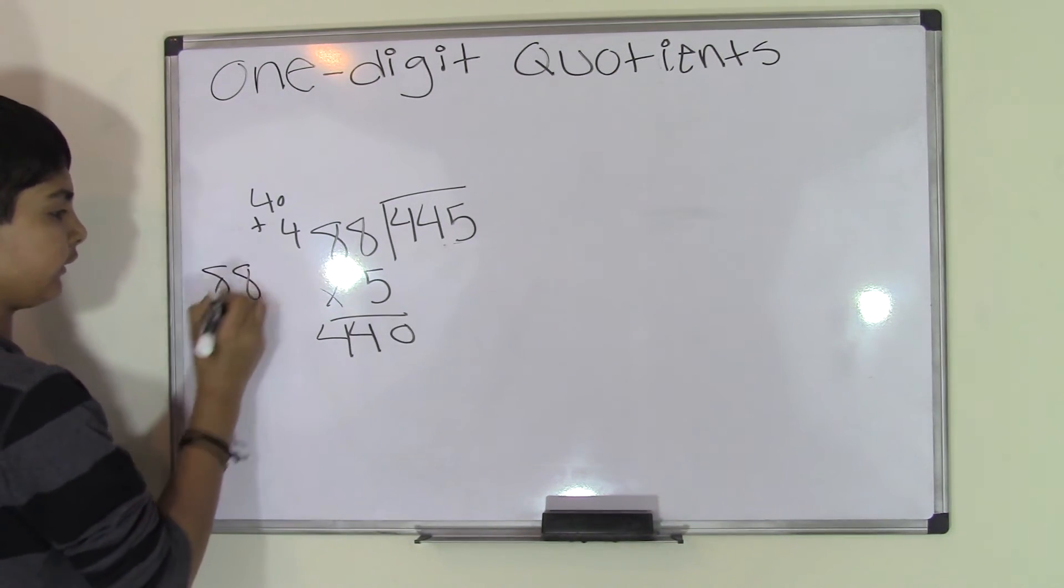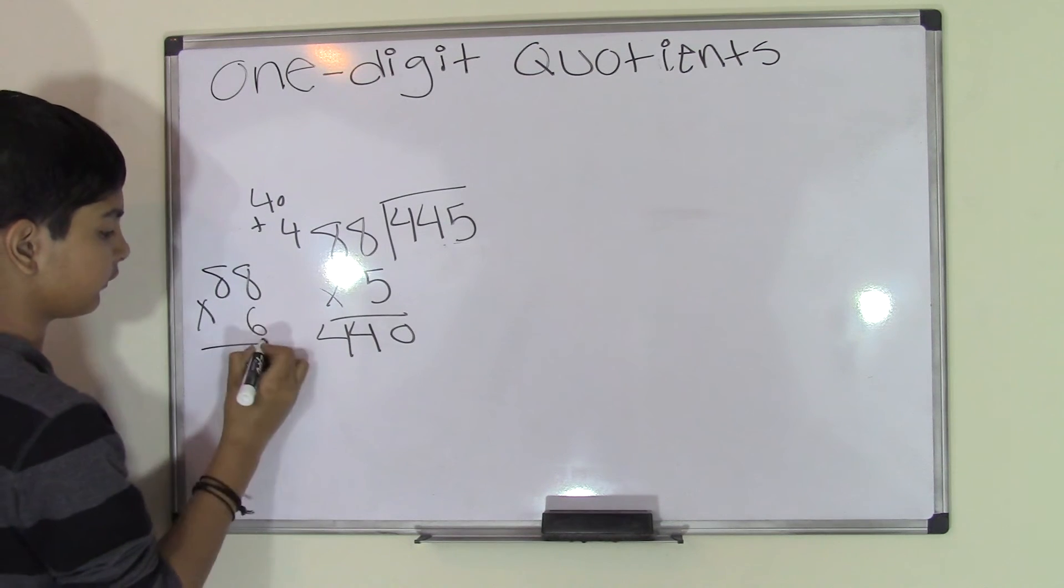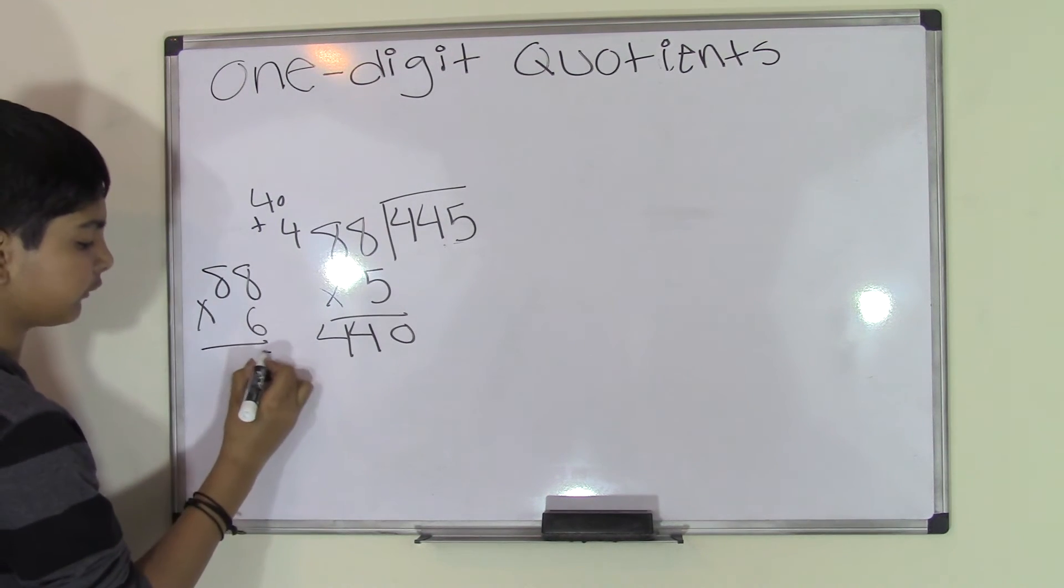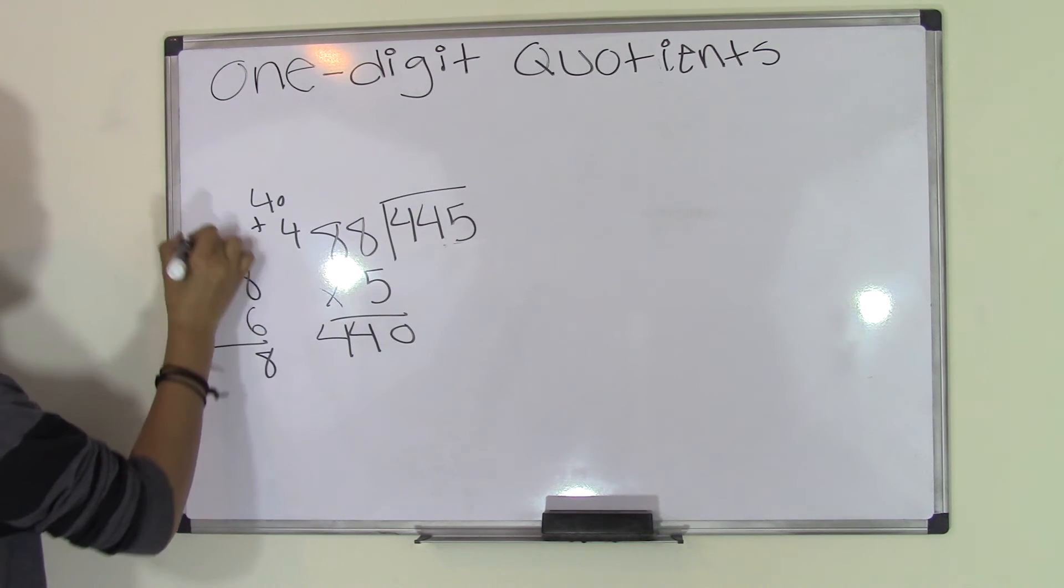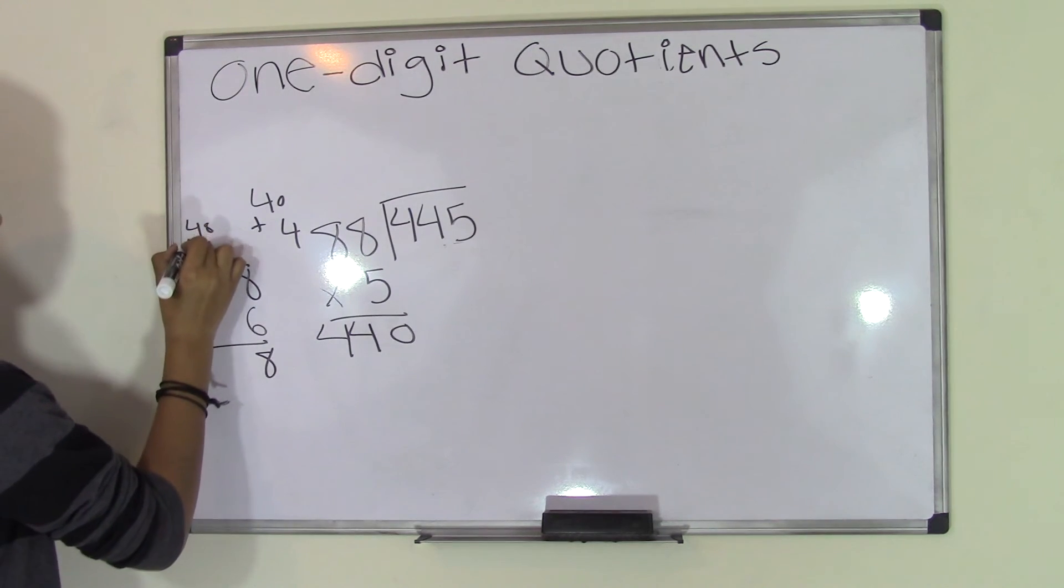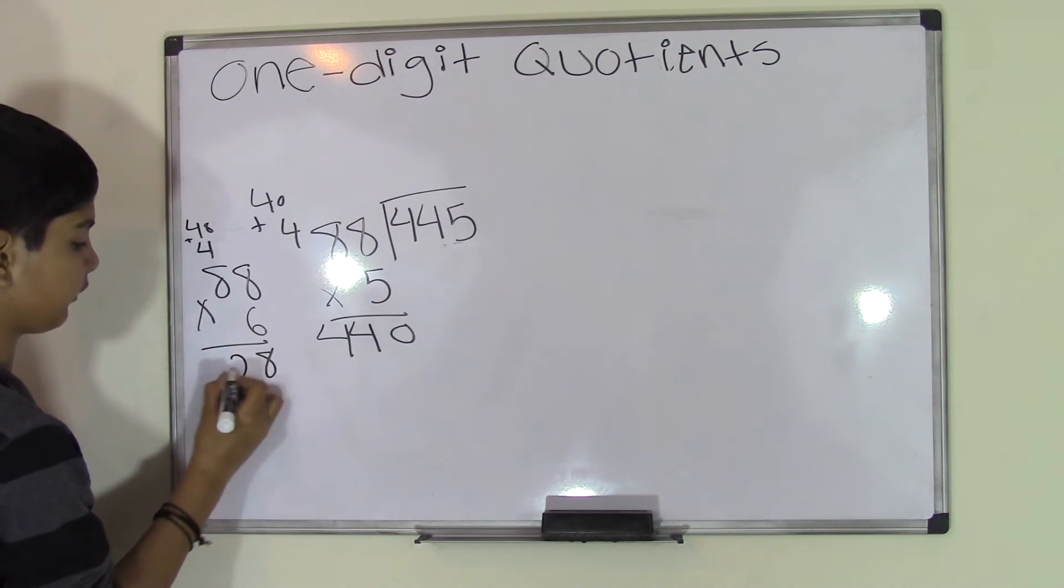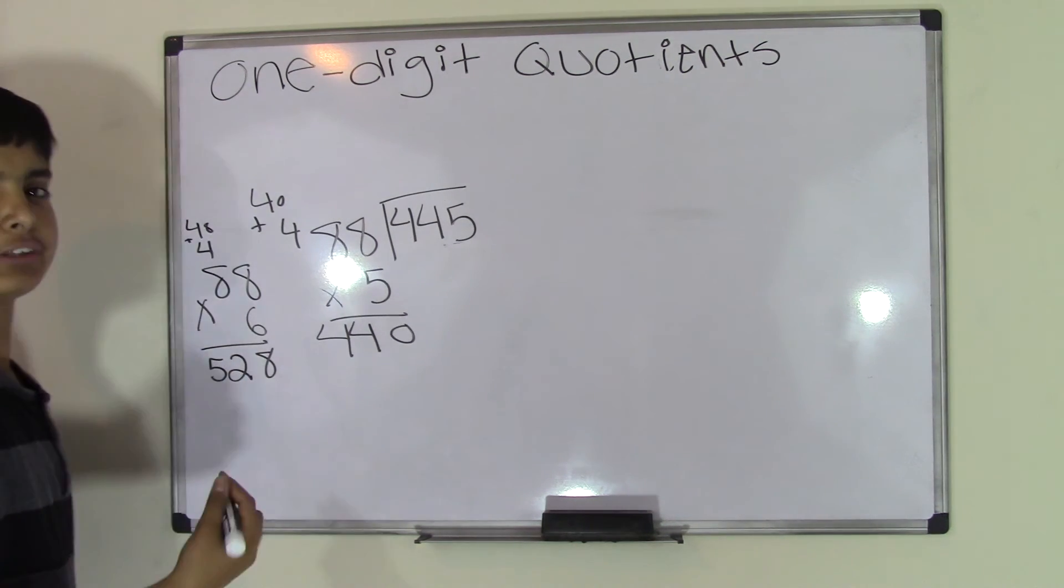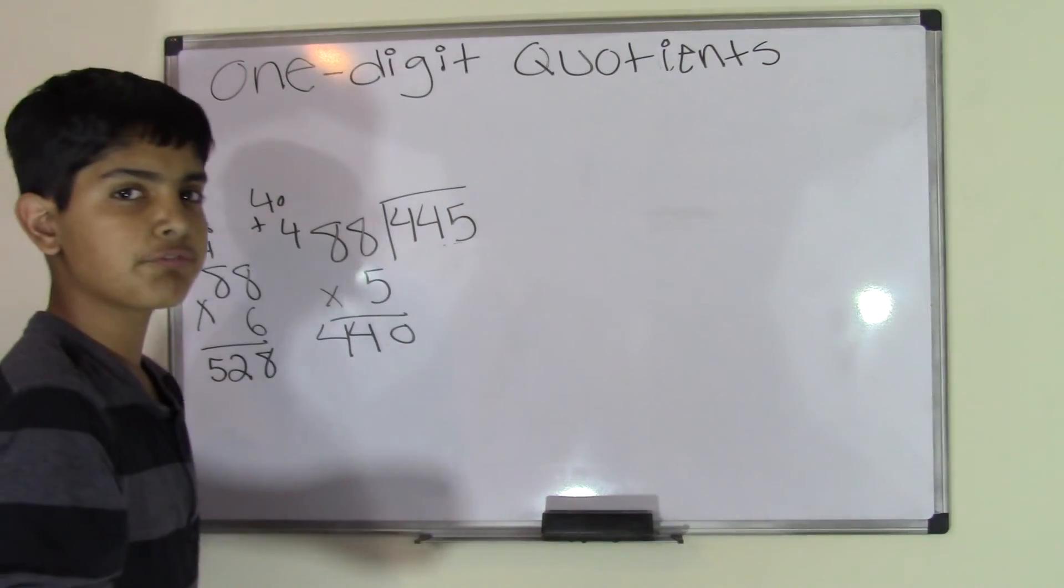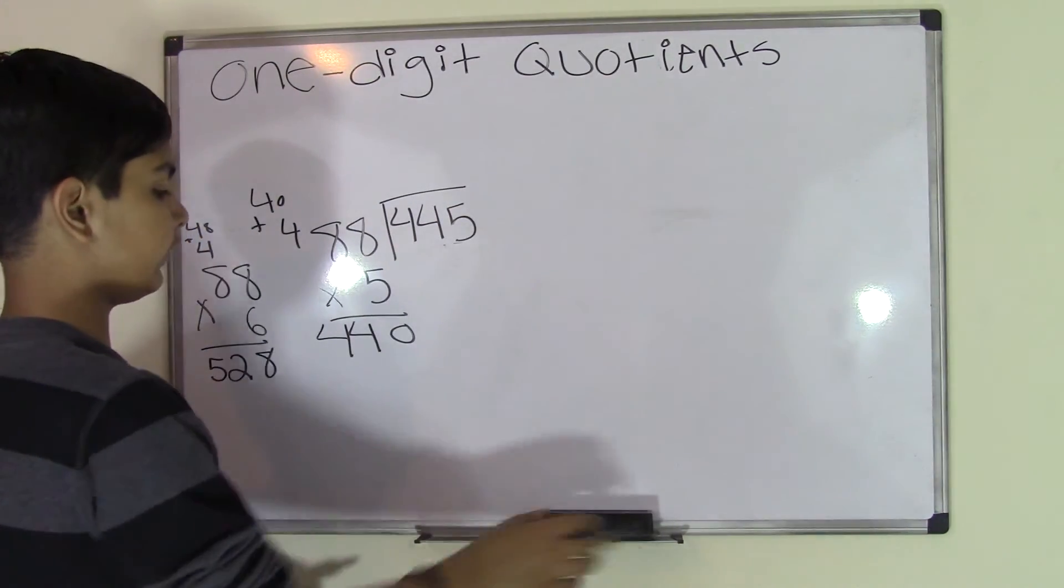We're going to do 88 times 6. 6 times 8 is 48, bring the 4 over. 6 times 8 is 48 again. 48 plus 4 is 528. 528 is obviously greater than 445, so we have to go with 88 times 5.